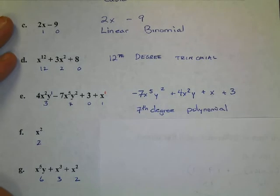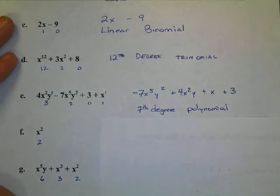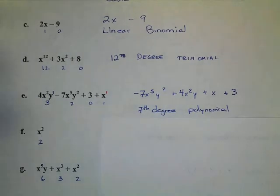F is a very short problem. As we look at it, the degree is 2. So, if you remember from above, what is something with a degree of 2? I hope you remember that's a quadratic. And it's one term. So, it's a quadratic monomial.